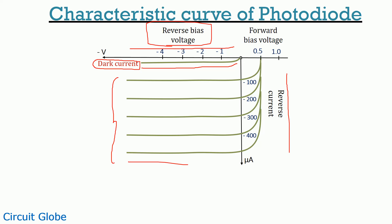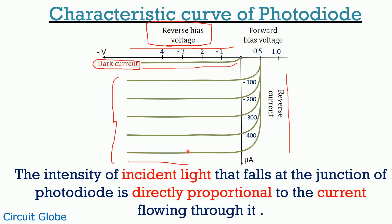We can clearly see here that after illumination, the curves show equal spacing between them. This is so because the intensity of incident radiation that falls at the junction of photodiode is directly proportional to the current that flows through the device. Or we can say the current increases with the increase in the intensity of light. This is all about the operating principle and characteristic of a photodiode.